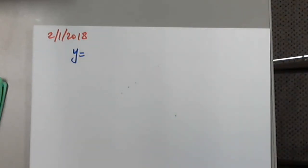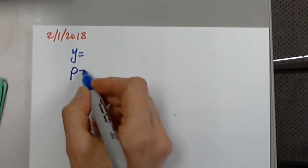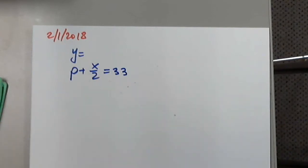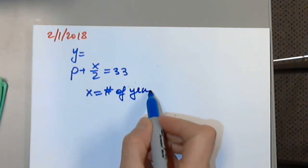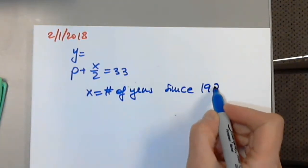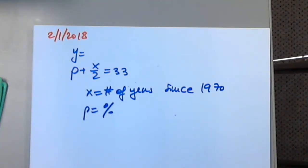The problem says: the accompanying bar graph shows the percentage of adults in a certain city who smoked cigarettes for selected years 1970 to 2010. We have p plus x divided by 2 equals 33, which describes the percentage p of adults who smoked cigarettes x years after 1970. So x is the number of years since 1970, and p is the percentage of adults who smoked.